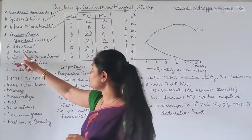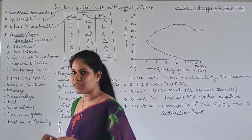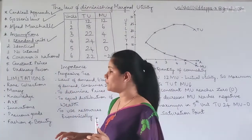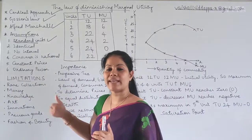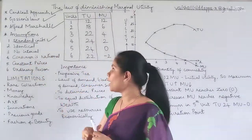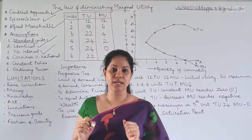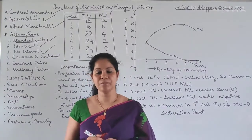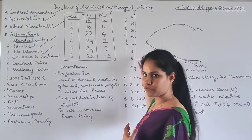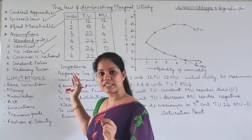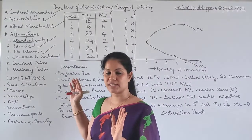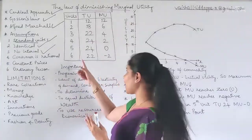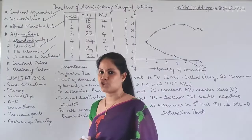Third assumption: no interval. While consuming any fruit — I've taken the example of apple — I am not going to give any breaks. If I have one apple in the morning, one in the afternoon, and one at night, I cannot prove this theory that way. To prove this theory, there should be no breaks — it should be a continuous process. I finish one apple and go straight to the second, third, fourth, and so on, continuously without any intervals.